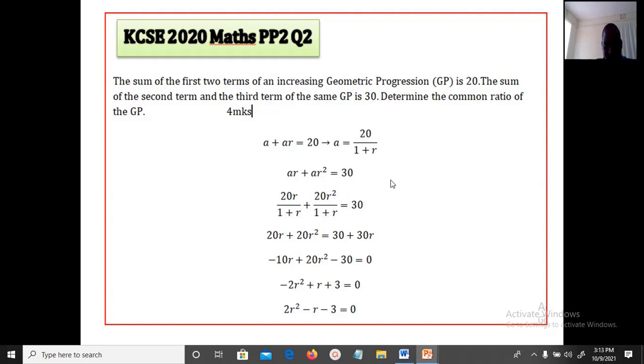Now here we are also told that the sum of the second term and the third term is 30. So the second term is ar and the third term is ar squared, this should be equivalent to 30. So we are going to replace in this second equation the value of a by 20 over 1 plus r. So we are replacing here 20 over 1 plus r times r plus 20 over 1 plus r times r squared equals 30.